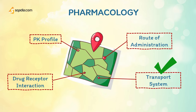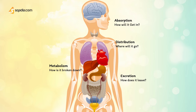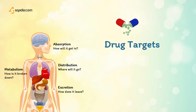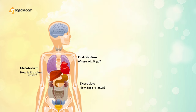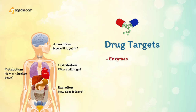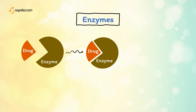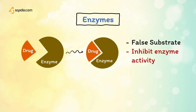Now, how does a drug produce a response in the body? The drug has certain targets in the body, the activation of which prompts a response at a cellular level. These targets are either enzymes or receptors. All enzymes are potential targets for drugs. Enzymes are protein catalysts that increase the rate of specific chemical reactions without undergoing any net change themselves. Drugs either act as a false substrate for the enzyme or inhibit the enzyme's activity directly, usually by binding to the catalytic site. Certain drugs may require enzymatic modification — this degradation converts a drug from its inactive form, the prodrug, to its active form.